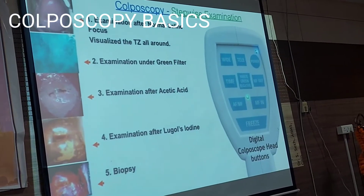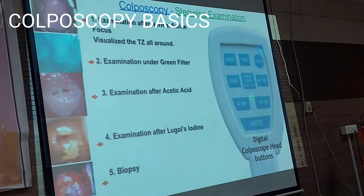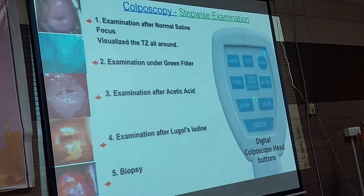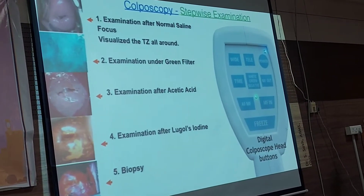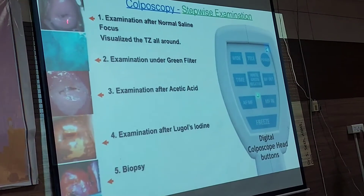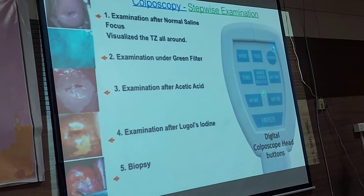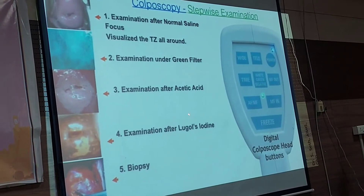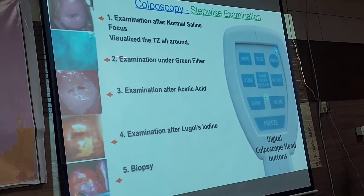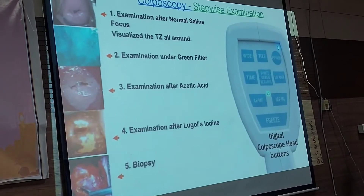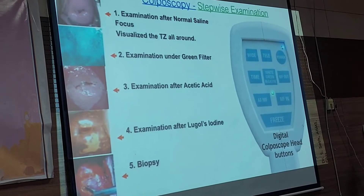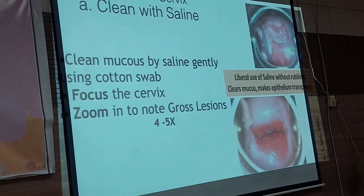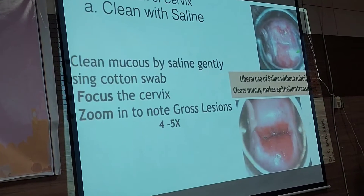The steps of colposcopy: once you have positioned the cervix, it is time to visualize the transformation zone. Clean the cervix of any mucus, then focus and visualize the transformation zone. The next step is examination with the green filter for vascularity, followed by acetic acid application, then Lugol iodine, and finally, if something is abnormal, a biopsy must be taken.